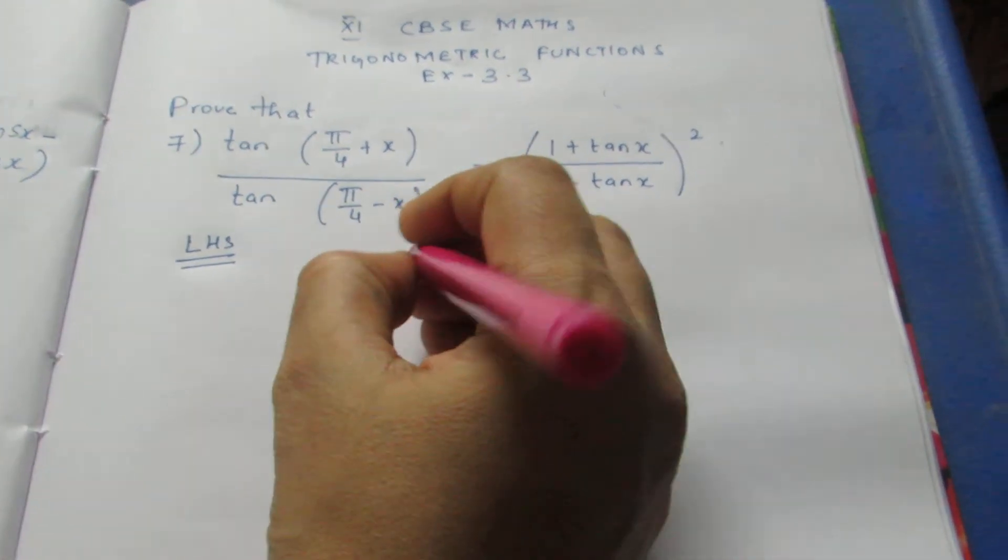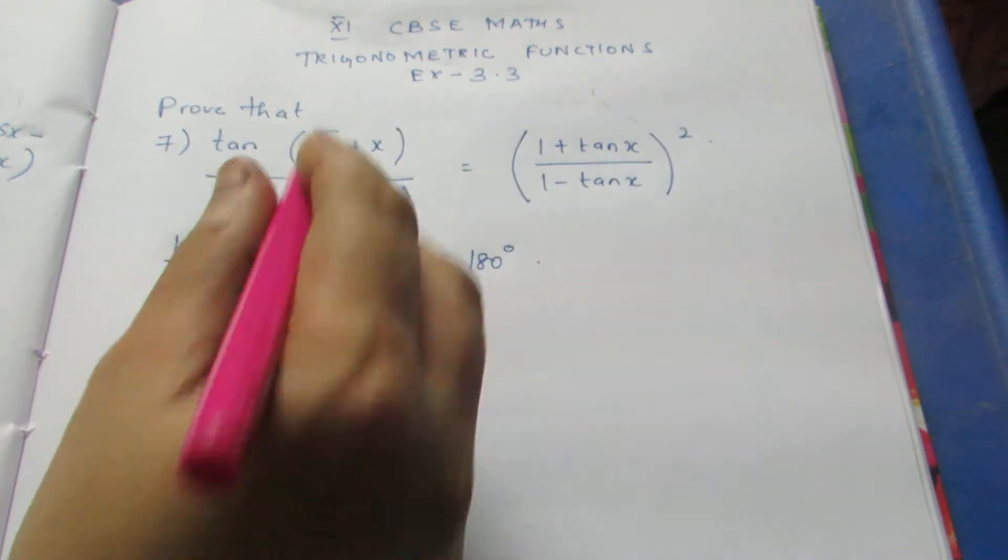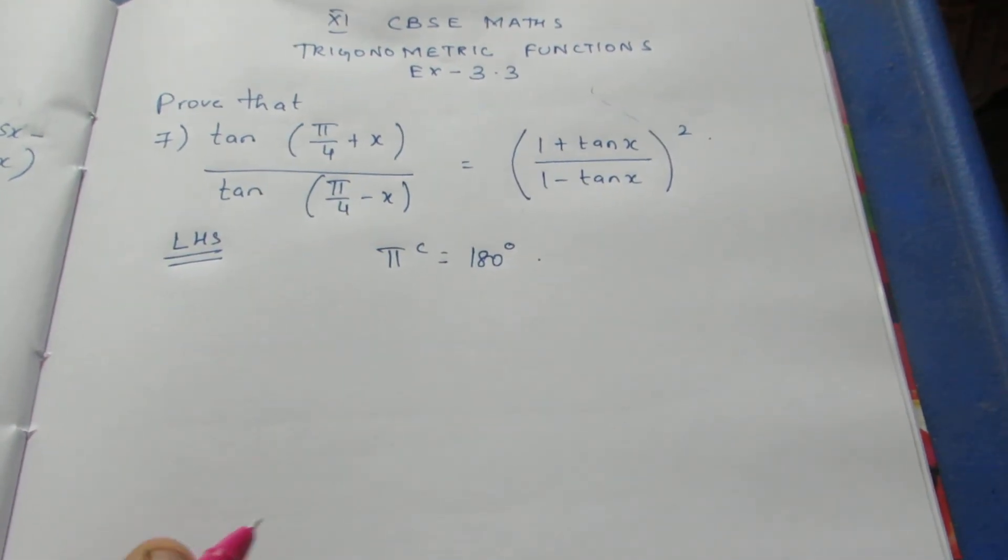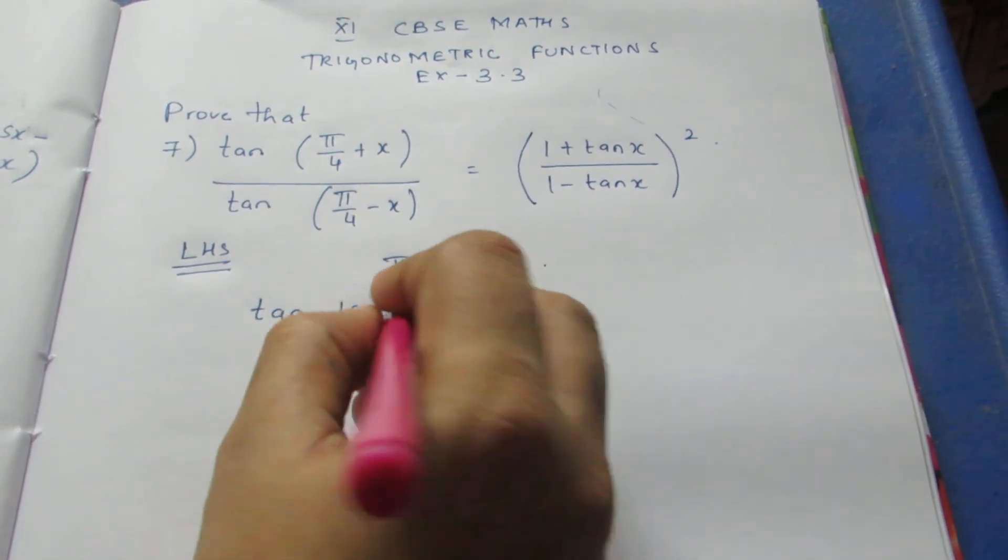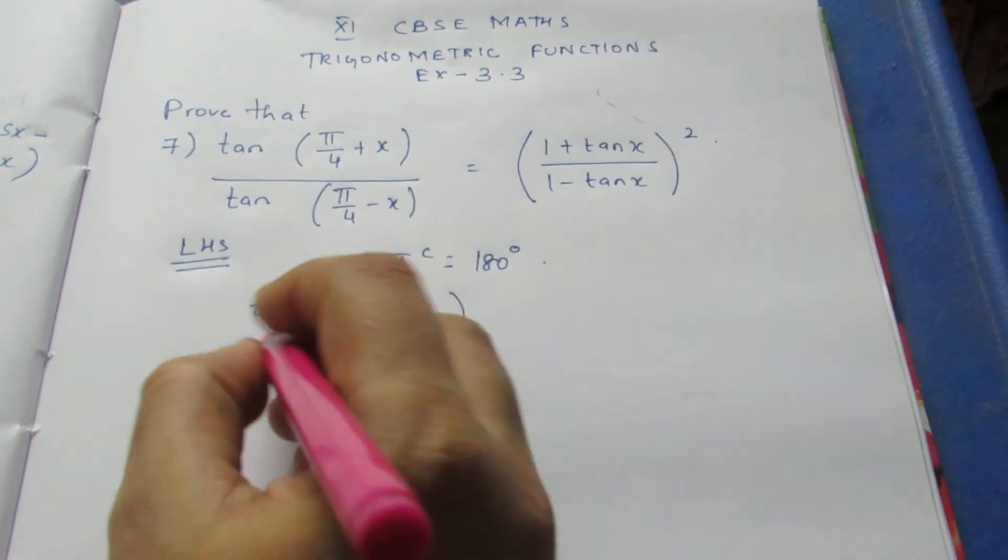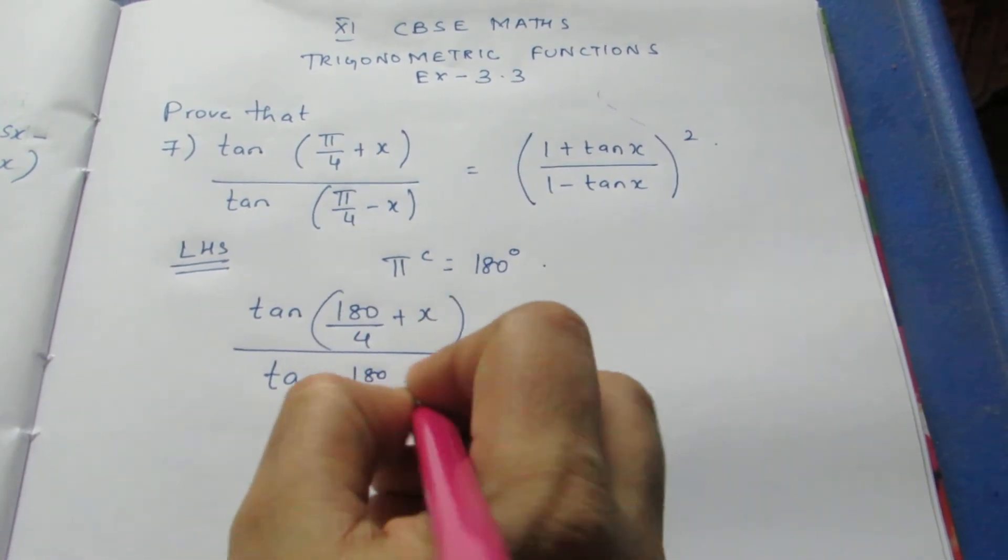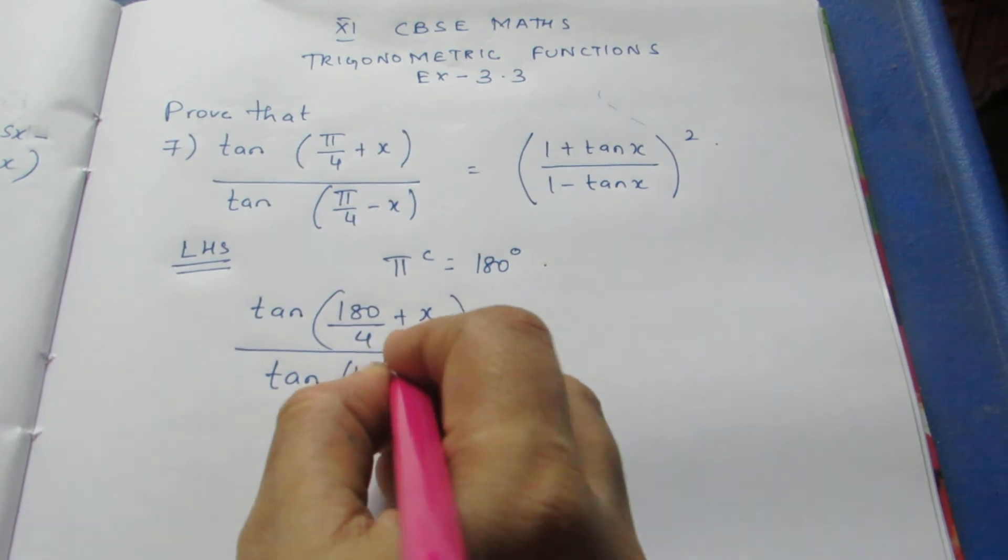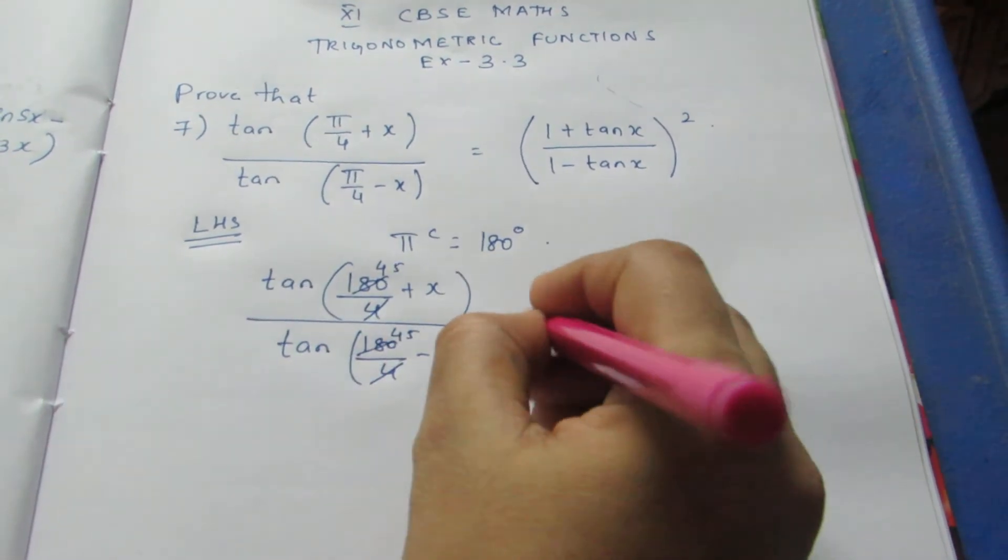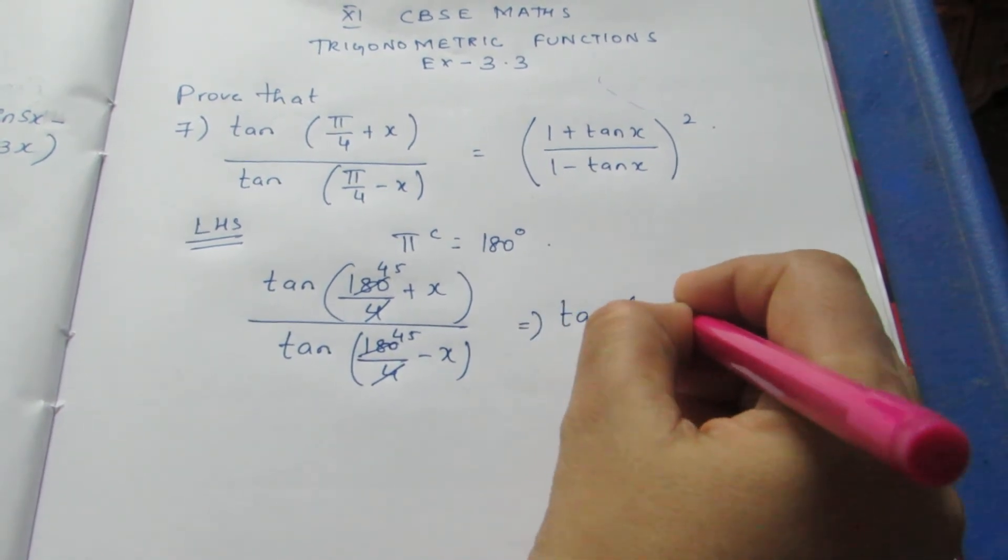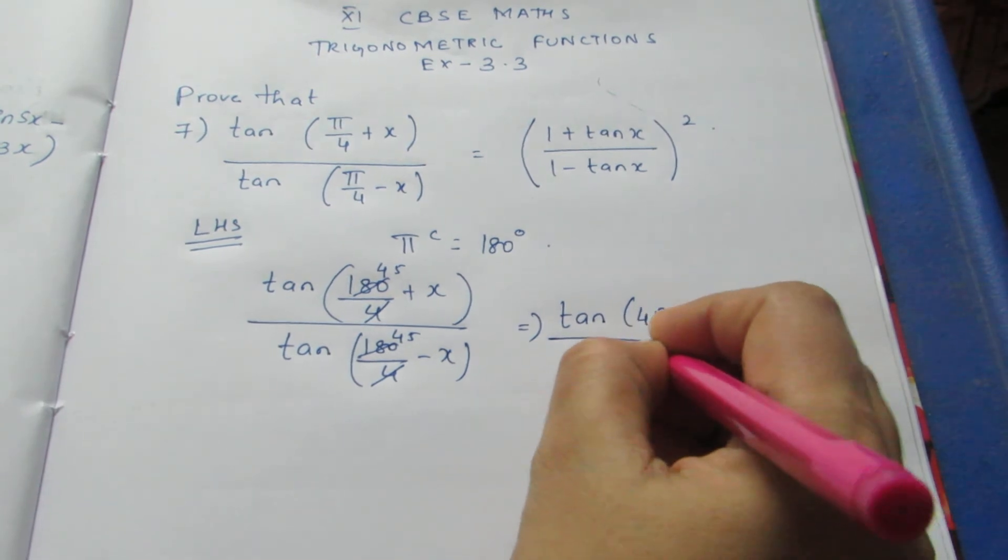To change to degree measure, we know that π radian equals 180 degrees. So wherever you see π, you just change to 180 degrees. So this becomes tan(180/4 + x) by tan(180/4 - x). Here cancel, it becomes 45. So this becomes tan(45 + x) by tan(45 - x).